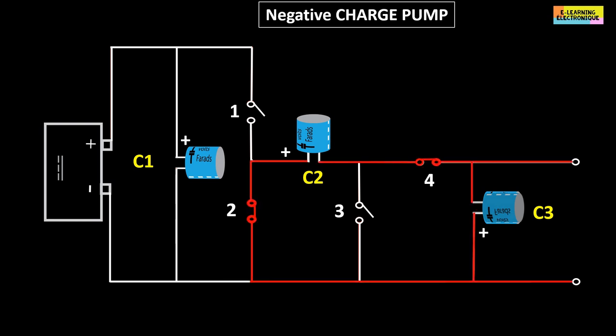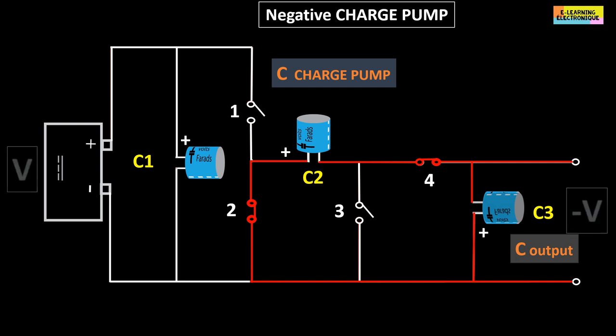Capacitor C2, known as the charge pump capacitor, is in parallel configuration with the output capacitor C3. C2 will deliver a voltage equal to the generator voltage but with an inverted polarity.